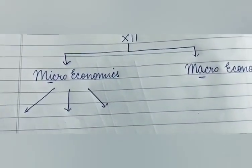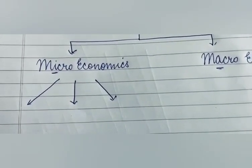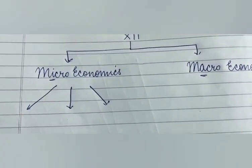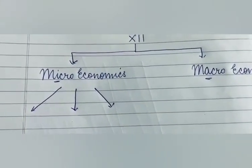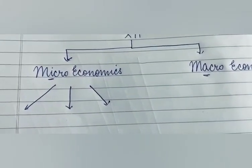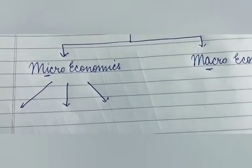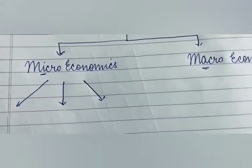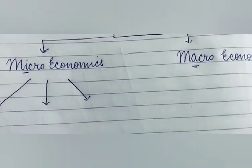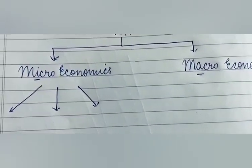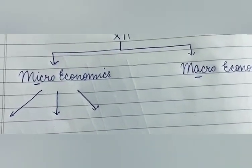Here 'i' signifies individual and 'a' signifies aggregate. Individual means when we are talking about a single person, a single individual or a single household. Aggregate means total — jab hum poore economy ke baare mein baat kar rahe hote hain. For example, if I talk about the demand of one person, that is microeconomics. If I talk about aggregate demand, that is macroeconomics — the total demand of the economy.